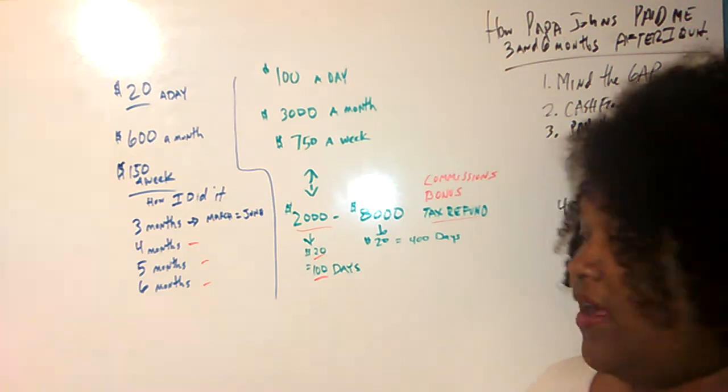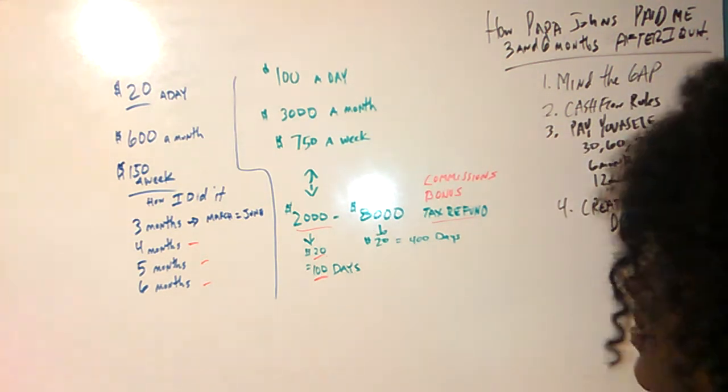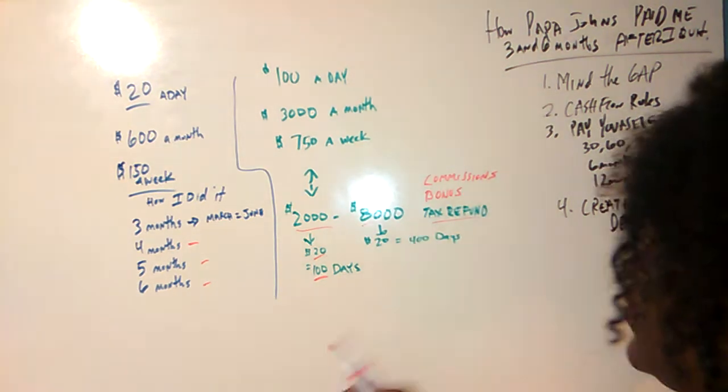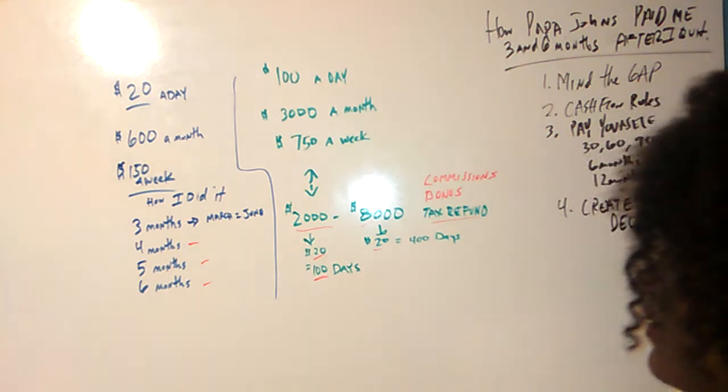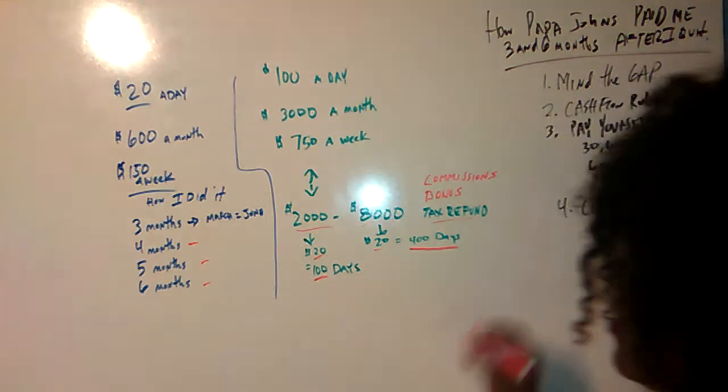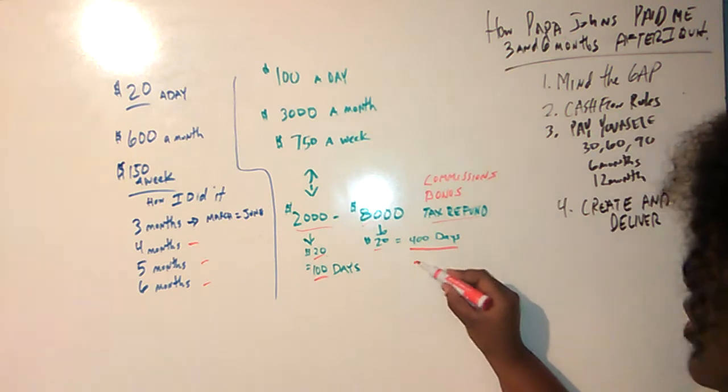If you had $8,000 a month, or this $8,000 tax refund, bonus or commission, you take it, break it into $20 a day. That was 400 days of pay.